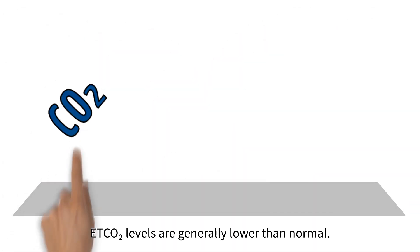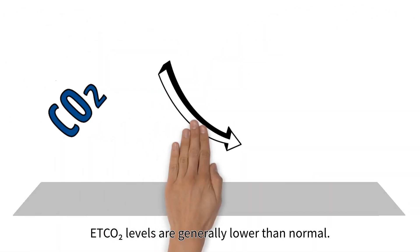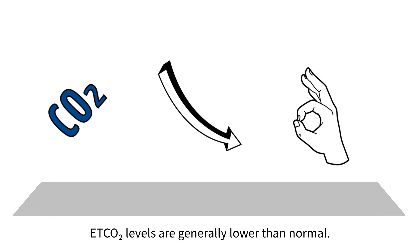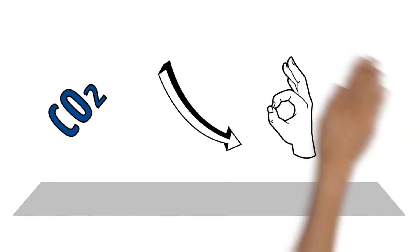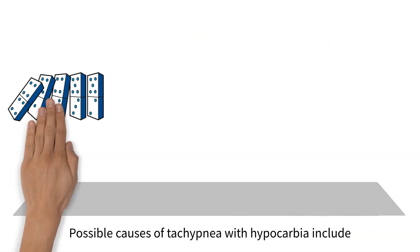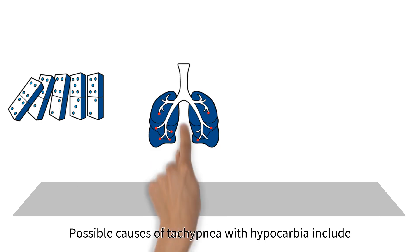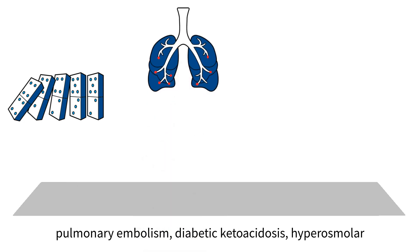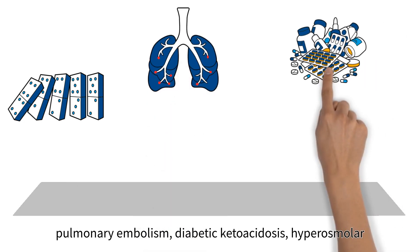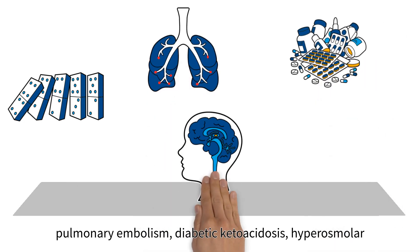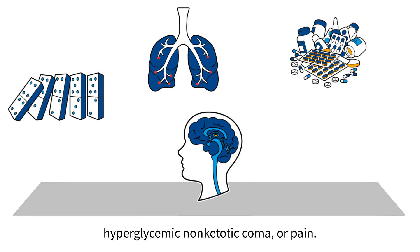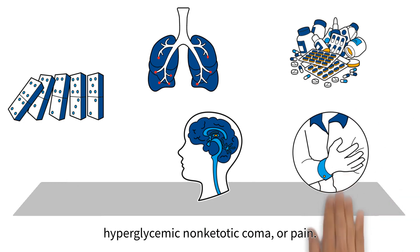End-tidal CO2 levels are generally lower than normal. Possible causes of tachypnea with hypocarbia include pulmonary embolism, diabetic ketoacidosis, hyperosmolar hyperglycemic non-ketotic coma, or pain.